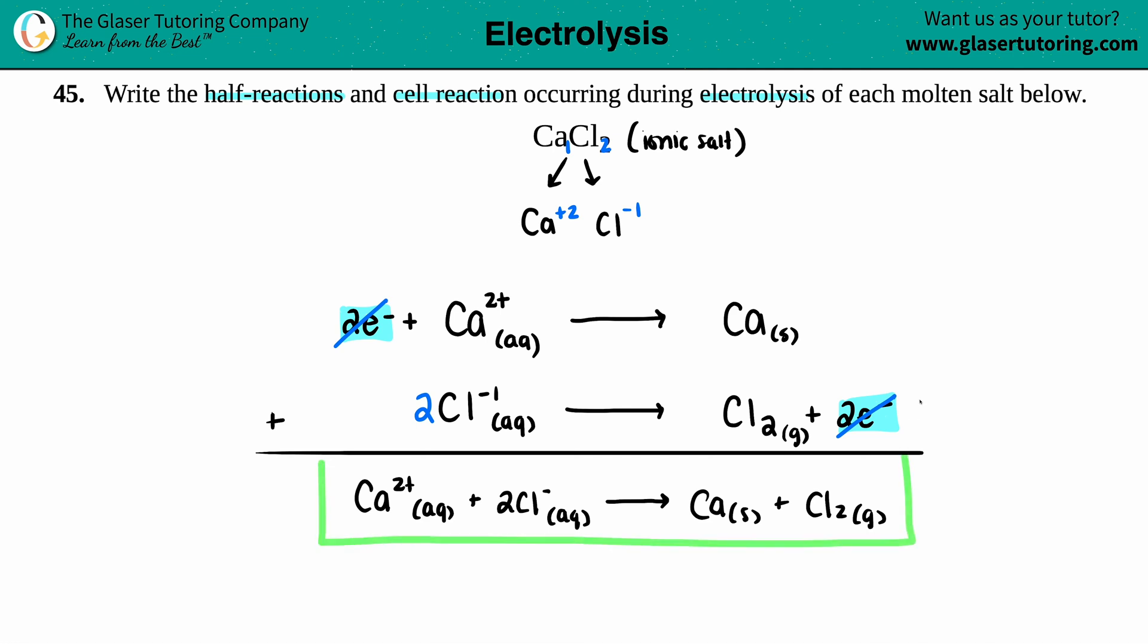And if we want to just quickly state which one was the anode and which one was the cathode, remember the cathode is always the one that has the electrons on the left side of the equation that's gaining electrons. So this is your cathode and your anode is always losing electrons. That's why the electrons are on the product side.